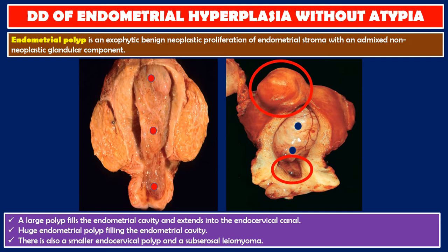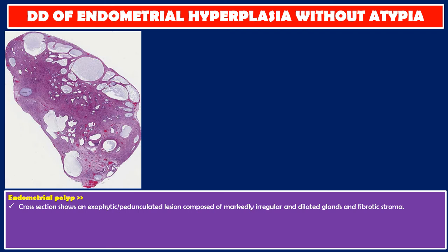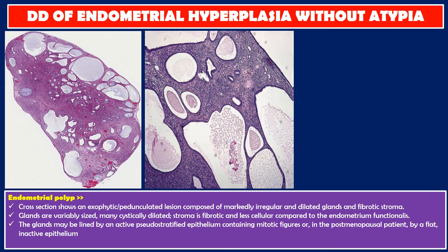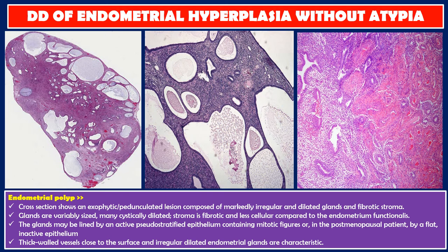Endometrial polyp is an exophytic pedunculated lesion composed of markedly irregular and dilated glands and fibrotic stroma. Glands are variably sized, many cystically dilated. Stroma is fibrotic and less cellular compared to the endometrium functionalis. The glands may be lined by active pseudostratified epithelium containing mitotic figures or, in the post-menopausal patient, by flat inactive epithelium. Thick-walled vessels close to the surface and irregular dilated endometrial glands are characteristic.